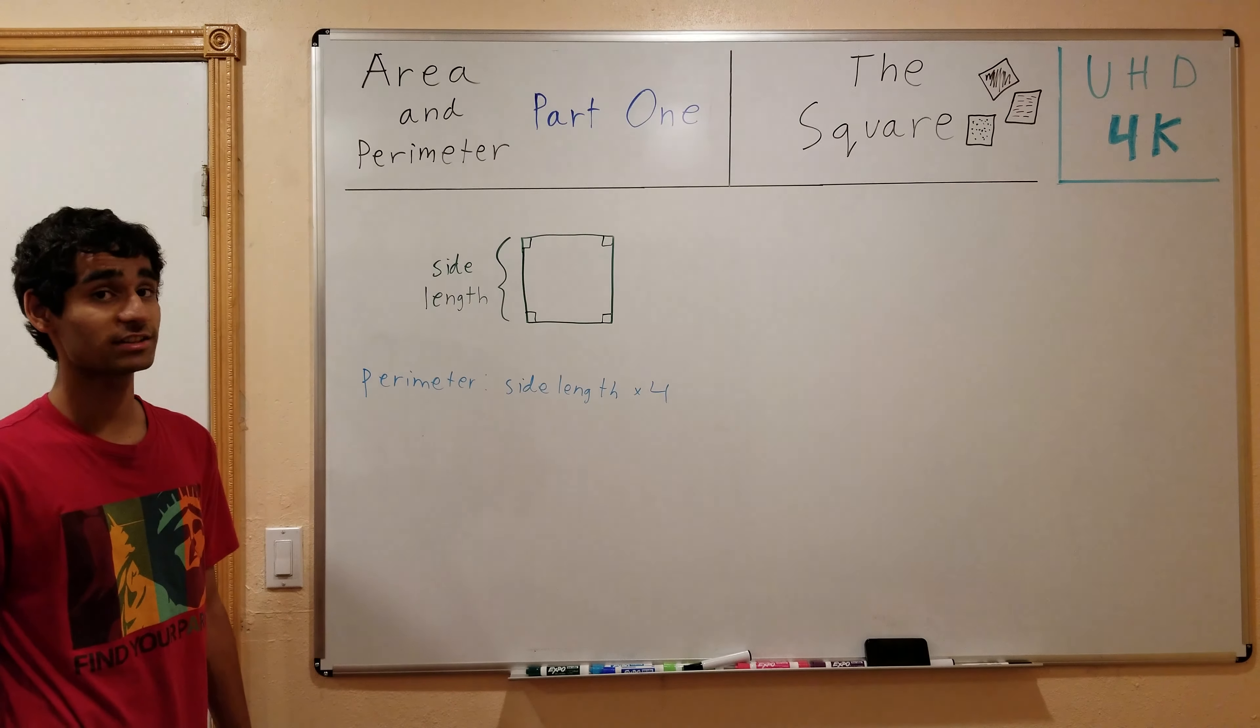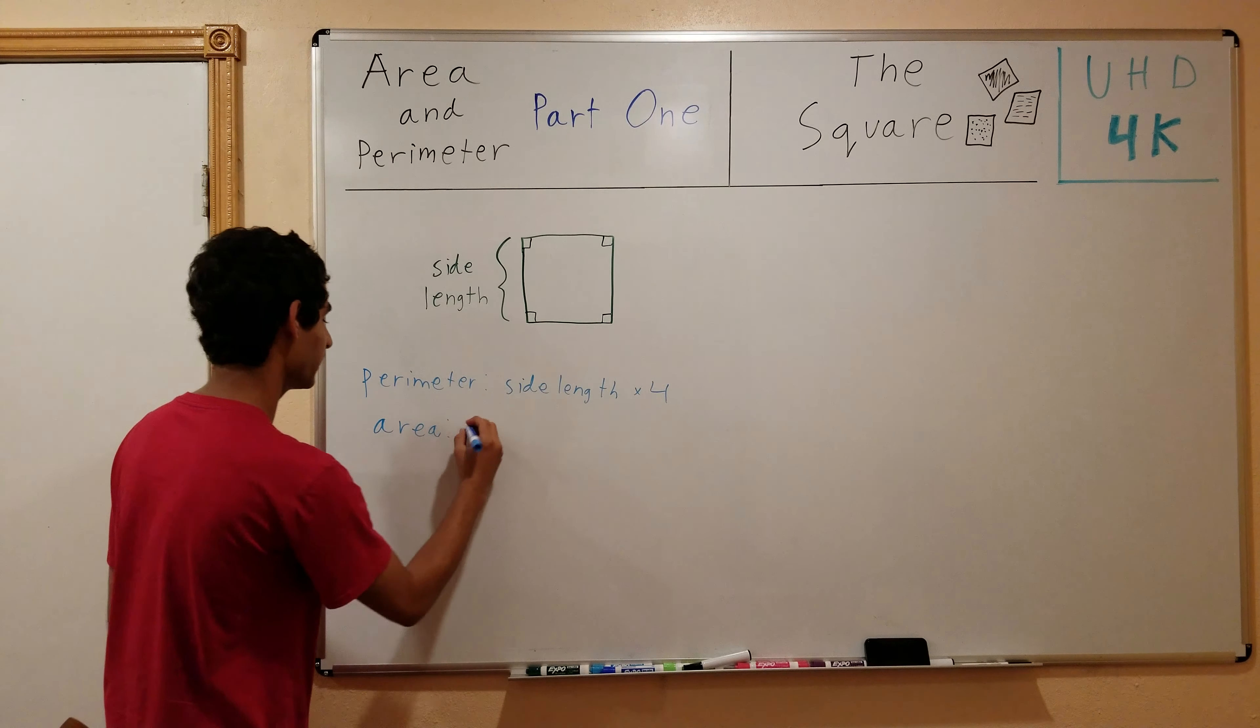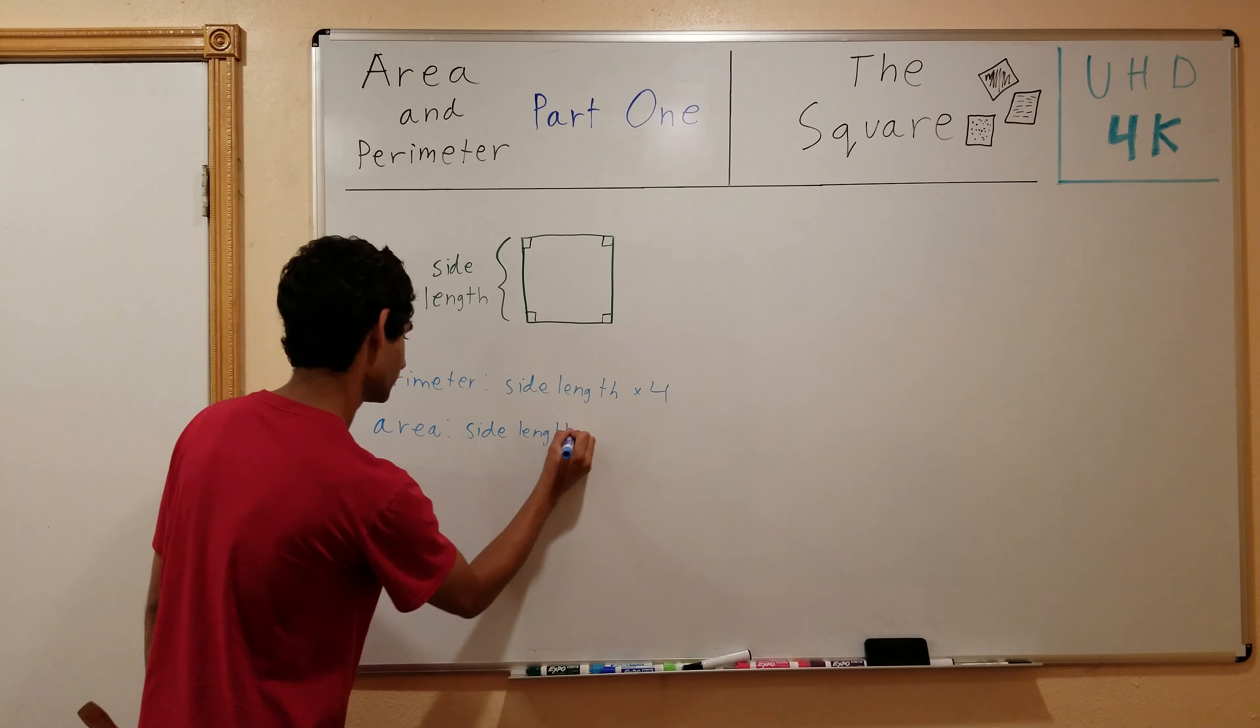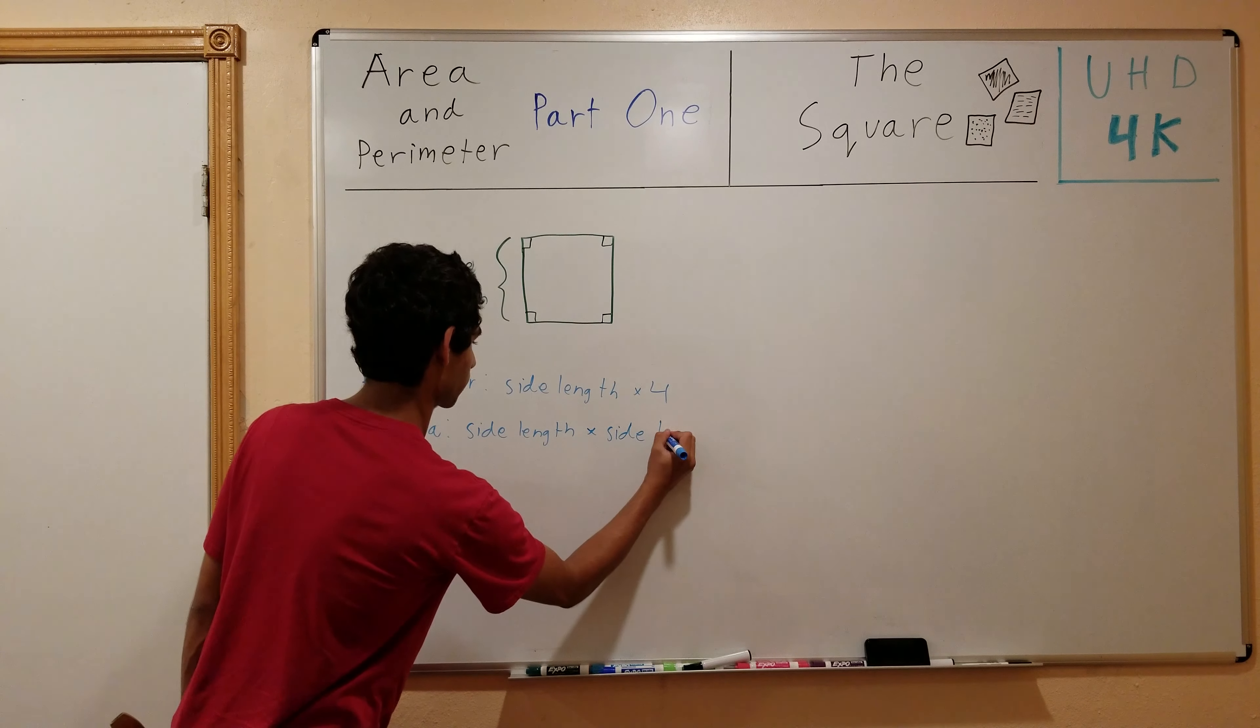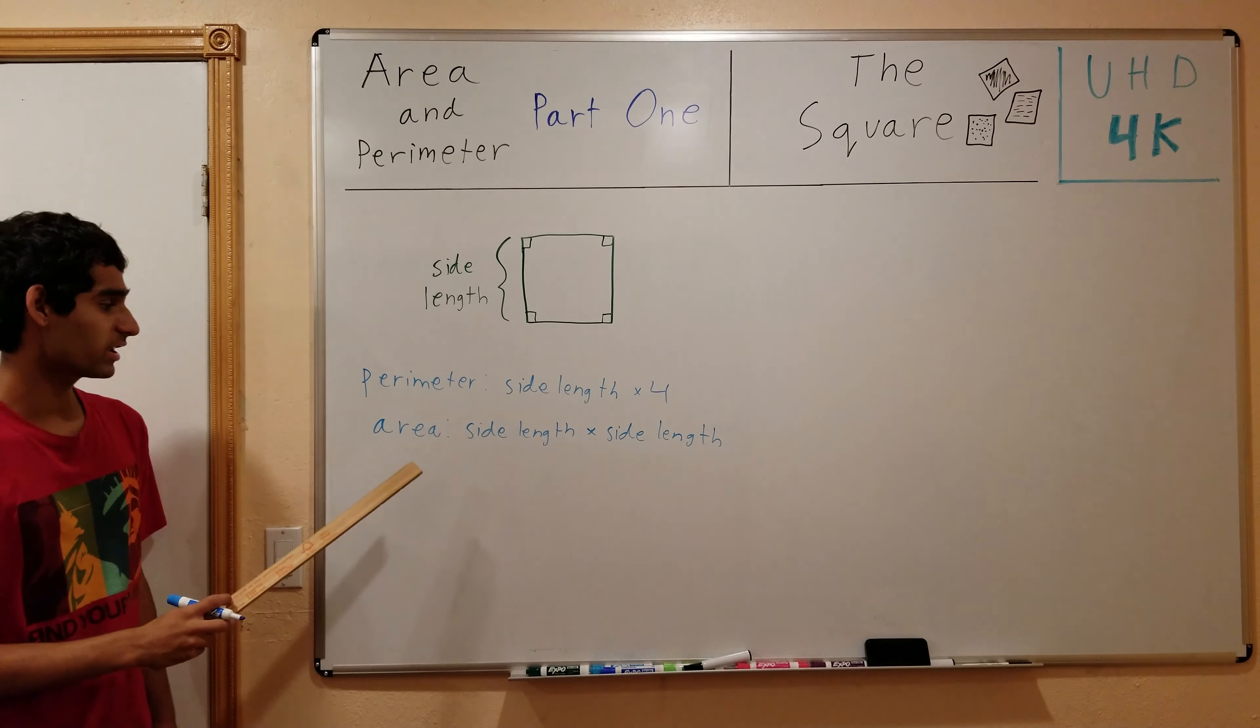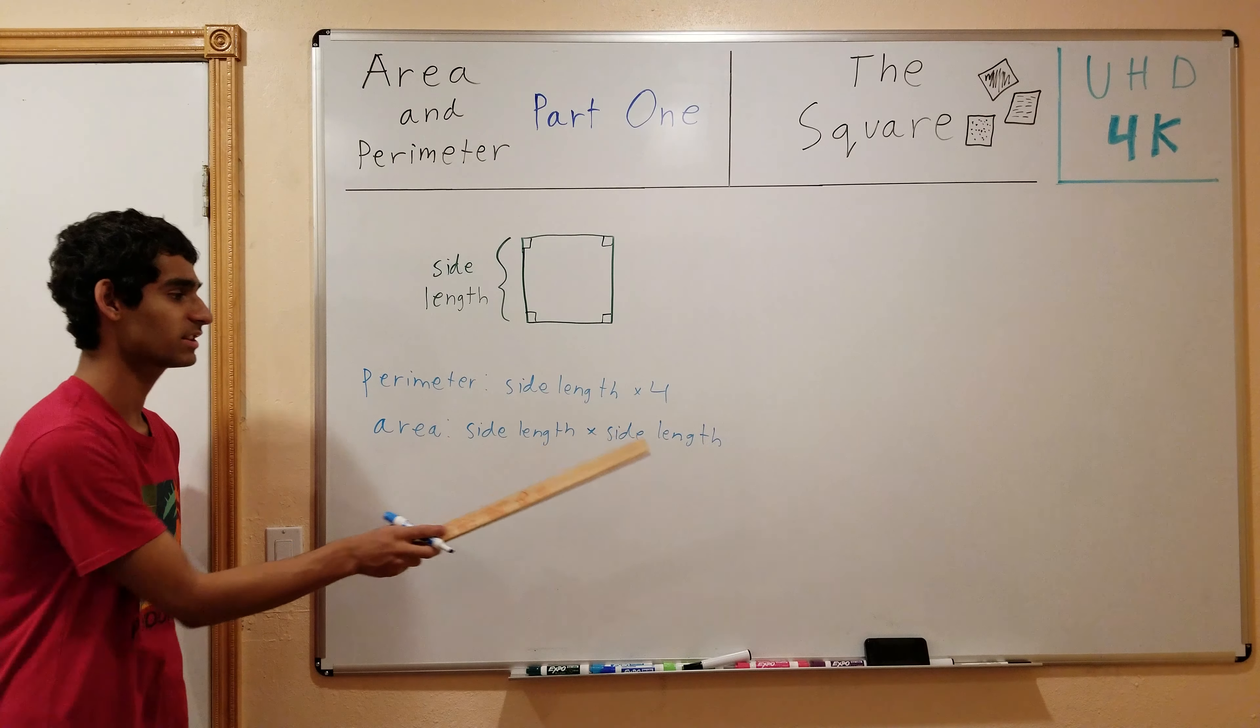Now the area is also relatively simple. It's simply the side length times itself, times side length. So this over here, that means the area of a square is simply equal to the side length times the side length.